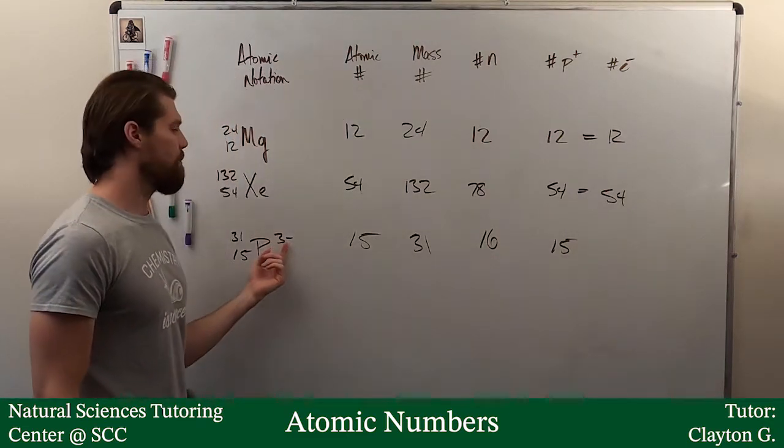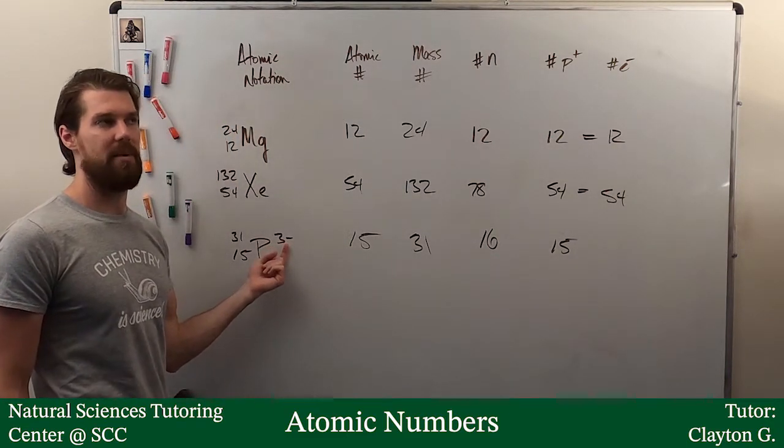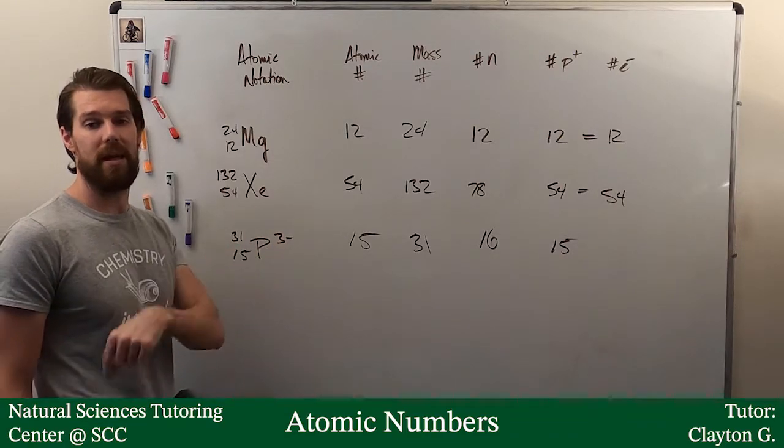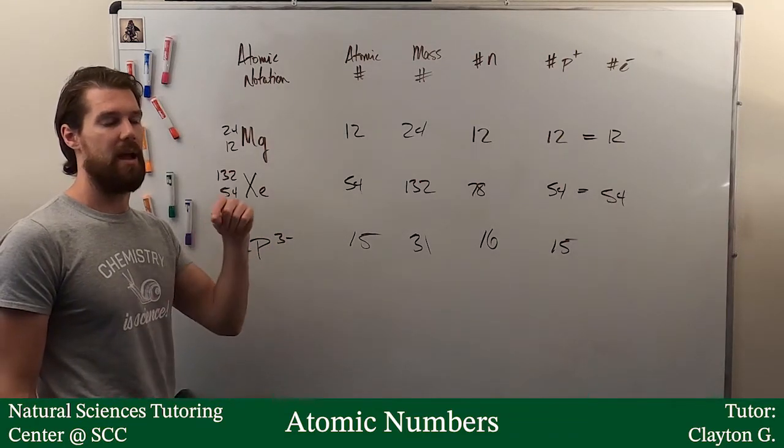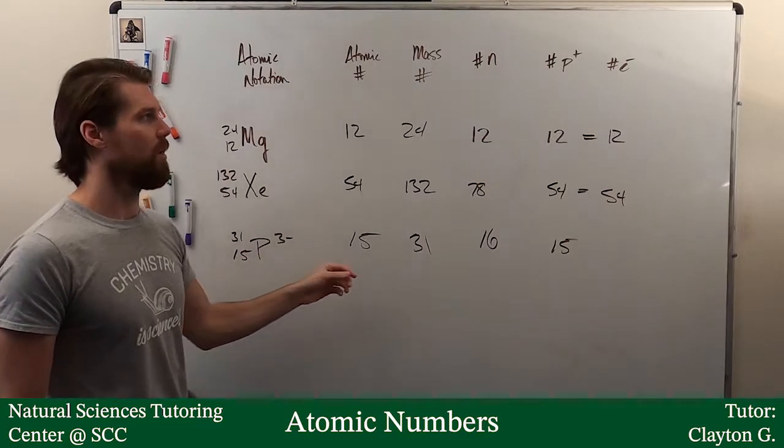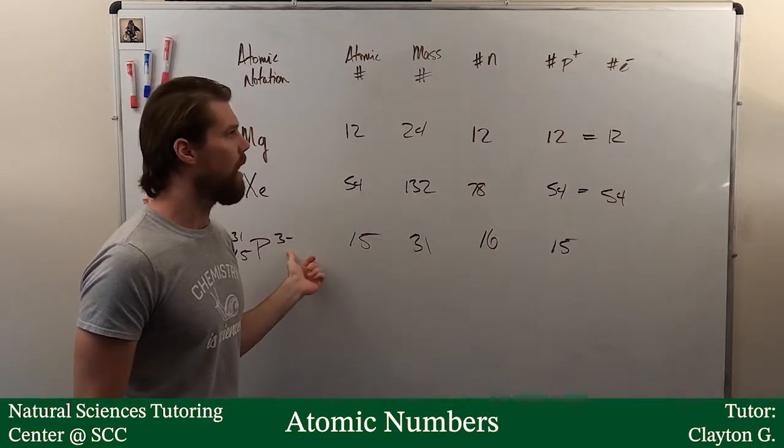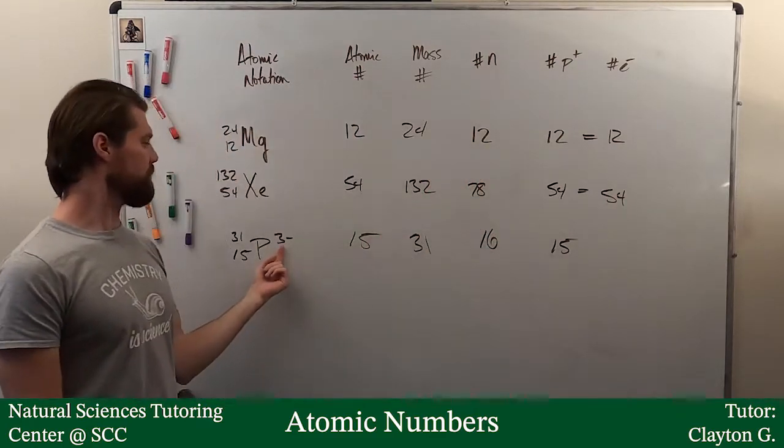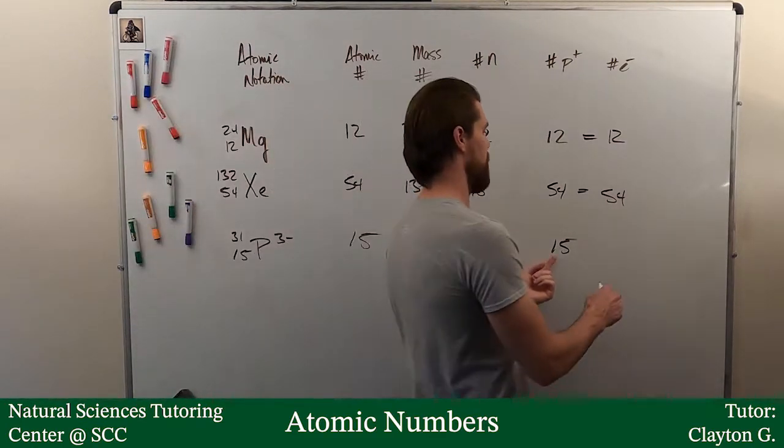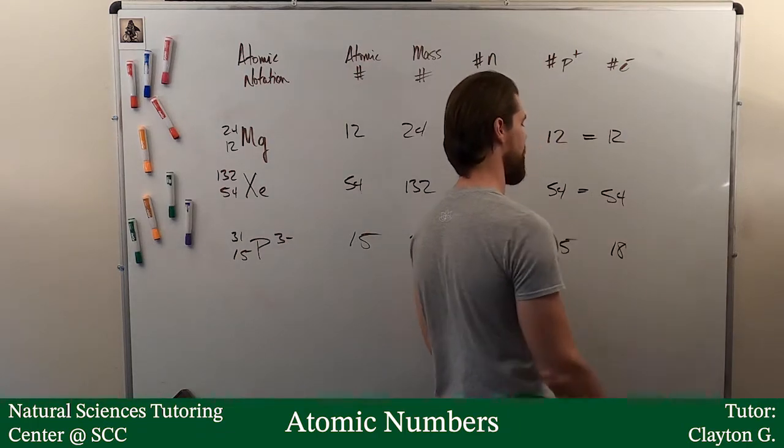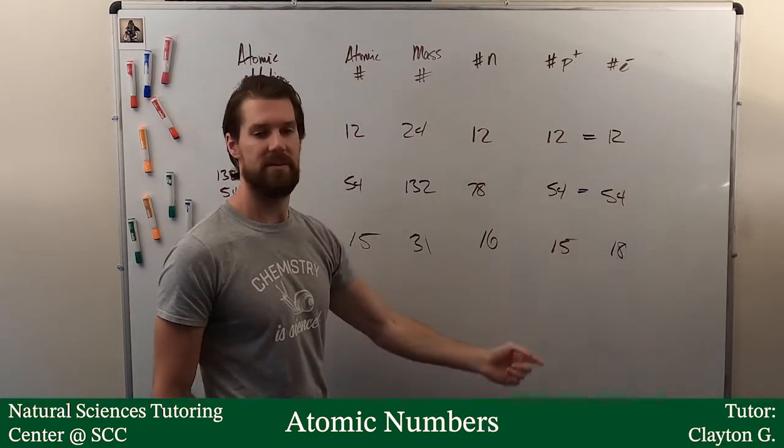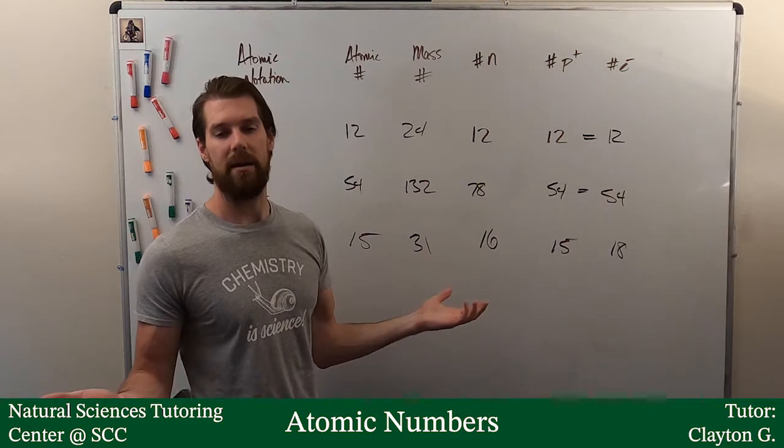Now, if I have a minus three charge, that means I have three more negative particles than I have positive particles. Well, I know electrons are negative. If it's negative overall, I have three more specifically negatives than positives. I must have 18 electrons and 15 protons. That's how you handle an ion.